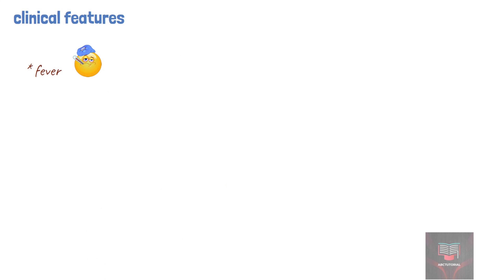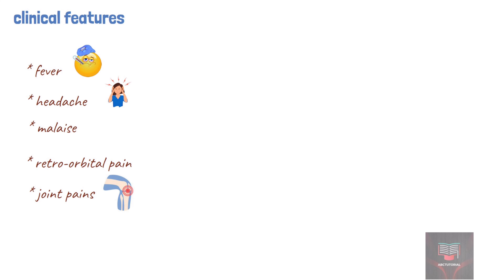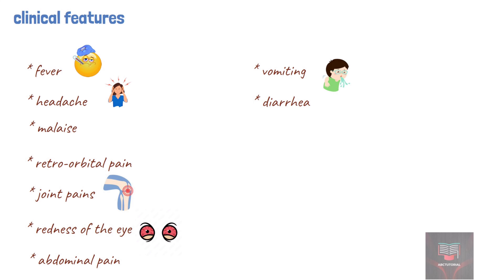Patients can present with non-specific symptoms including fevers, headaches, and malaise. Clinical features that are considered common for viral hemorrhagic fevers include retro-orbital pain, joint pains, redness of the eye, abdominal pain, vomiting, and diarrhea. Patients will also complain of bleeding gums or epistaxis.